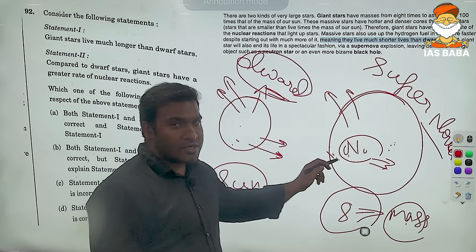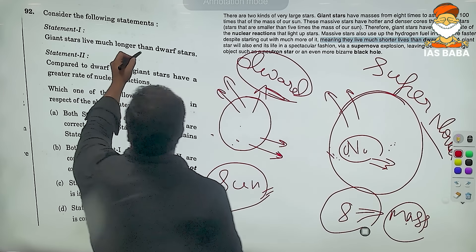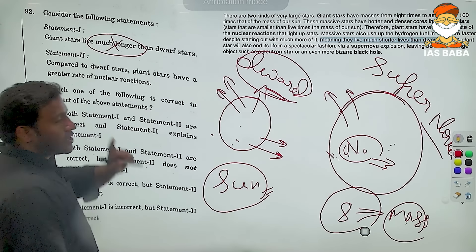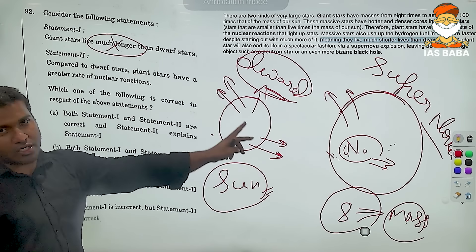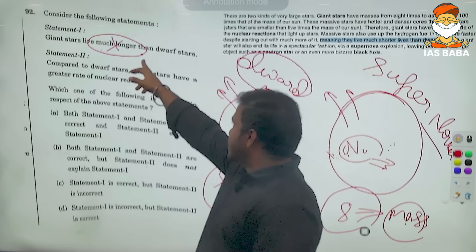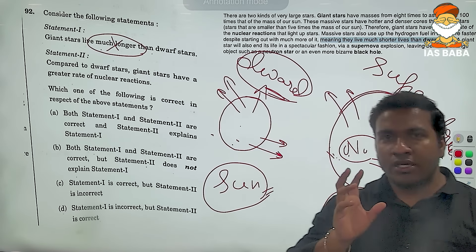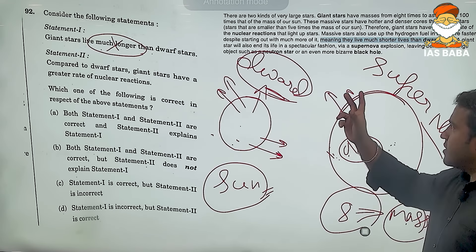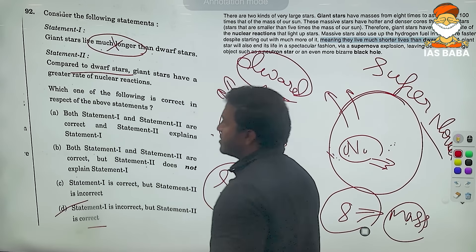Since statement 1 is wrong, we end up with D as the answer. In assertion-reasoning questions, if you find one wrong statement, you directly get either C or D. This question required knowledge of supernova — it is not in NCERT, but any good book or good classes will cover it. Being honest, I didn't discuss whether they live longer or shorter, but the supernova concept — discussed in class — is more than enough to cut statement 1.